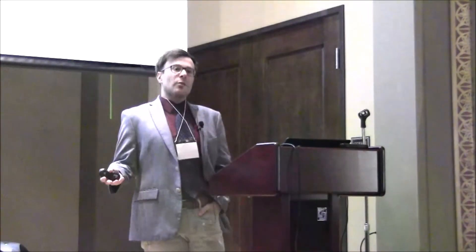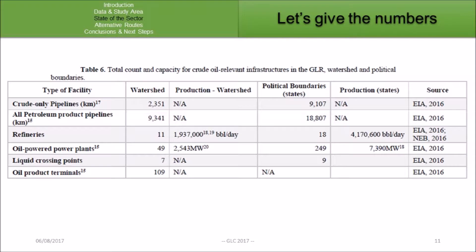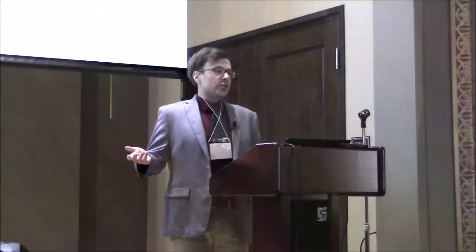Let's take some numbers. The region itself — the watershed — for what data we could access has about 2,300 kilometers of pipelines, 11 refineries, 49 power plants. The number of refineries was counted in terms of financial statements filed rather than actual plants. There are seven liquid crossing points as defined by the EIA, 109 petroleum product terminals and so forth. On the other side, you can see what happens if you start following the political boundaries of the Great Lakes region.